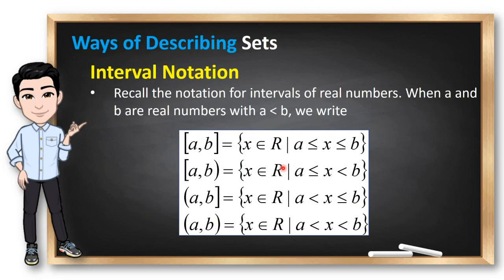And we can also use interval notation if we want to describe sets. Do you recall interval notation? When a and b are real numbers with a less than b, we can write the following interval notations. So, if you can see here the bracket a to b, it means that x is an element of any real number such that x is greater than or equal to a but less than or equal to b. So, when you see these brackets, it means any numbers written here are included in our set.